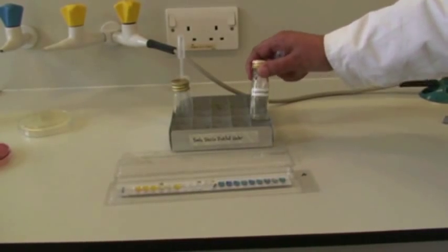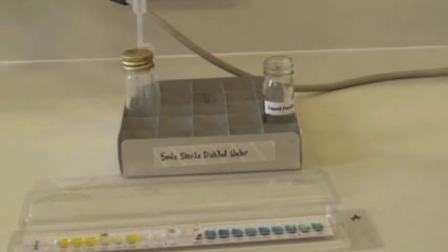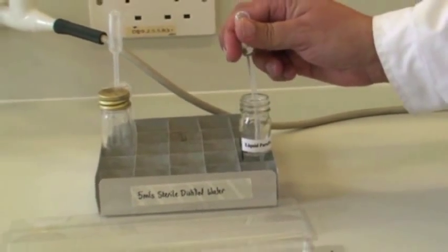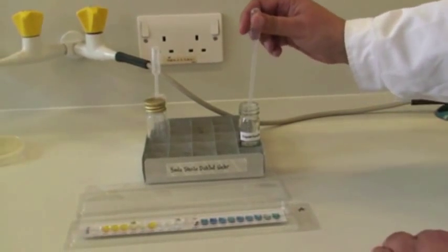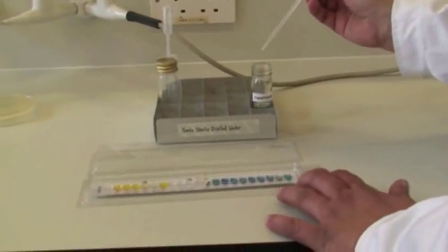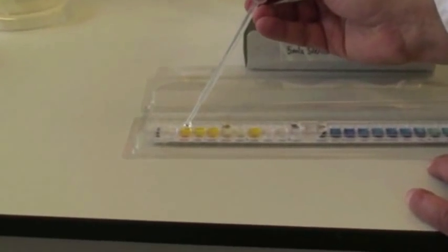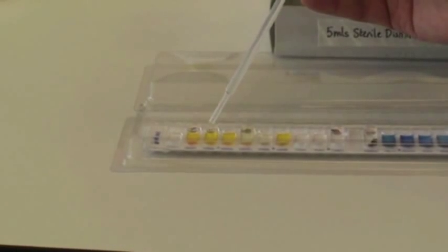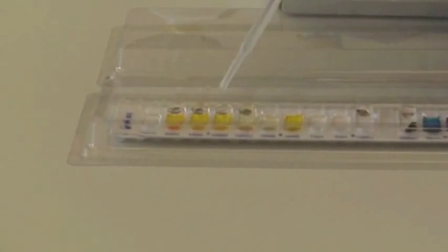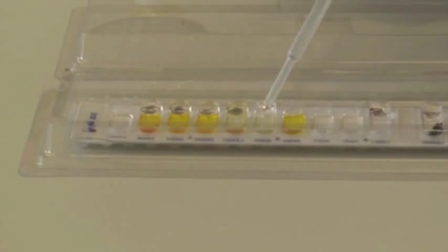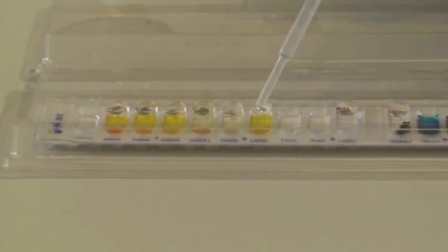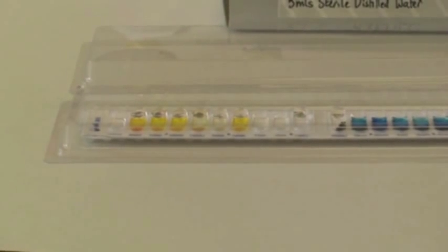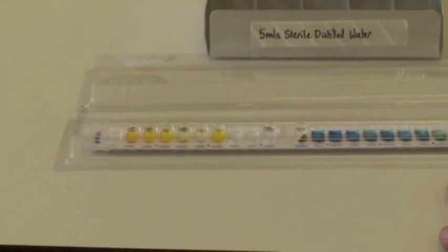We're going to use the liquid paraffin to top up some of the cupules. The ones that we're going to top up are the ones that are underlined: LDC, ADH, LDC, ODC, H2S, and urea. What we're doing is simulating anaerobic conditions by topping up with paraffin oil.